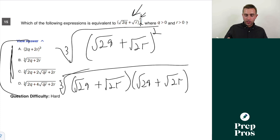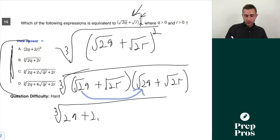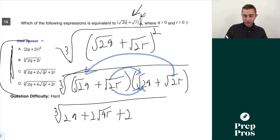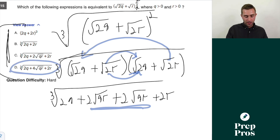So we have the cube root of (√(2q) + √(2r)) × (√(2q) + √(2r)). Foiling that out: √(2q) · √(2q) = 2q; √(2q) · √(2r) = 2√(qr); √(2r) · √(2q) = 2√(qr) again; √(2r) · √(2r) = 2r. Adding all terms together gives us 2q + 4√(qr) + 2r inside the cube root, which leads to answer D.